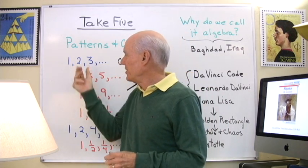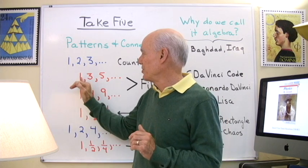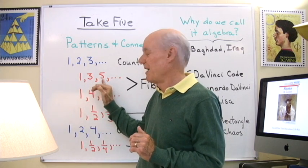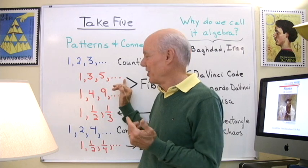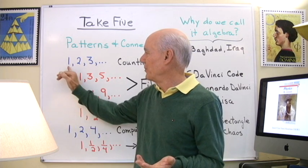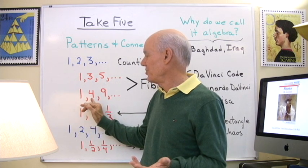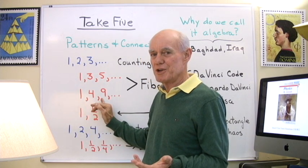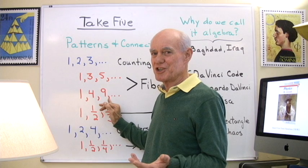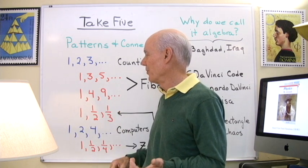Within this sequence of numbers are some other sequences. For instance, the sequence of odd numbers: 1, 3, 5, 7, 9, and so on and so forth. And the sequence of squares — what we get when we square each of these numbers: 1 squared, 2 squared, 3 squared, the next one will be 4 squared which is 16, 5 squared which is 25, and so on and so forth.